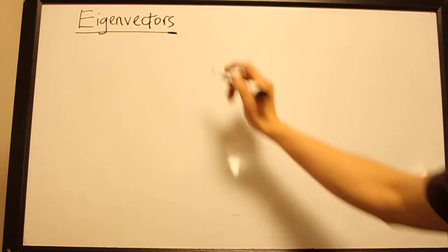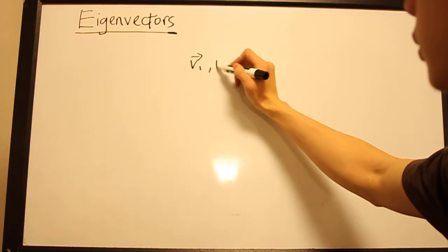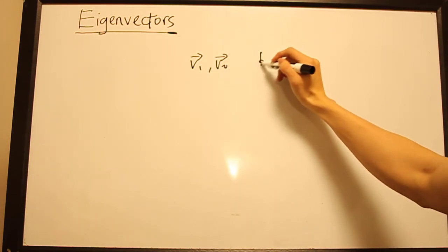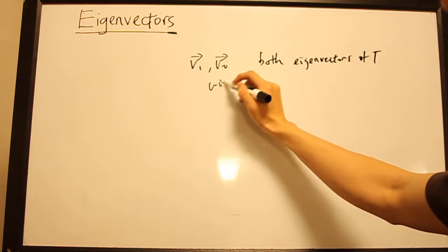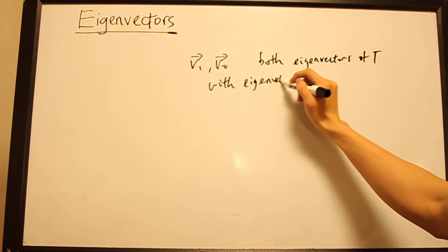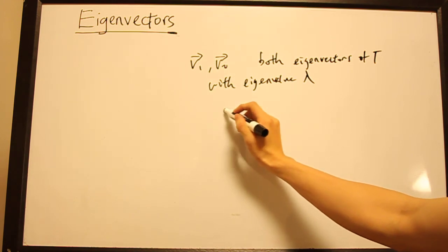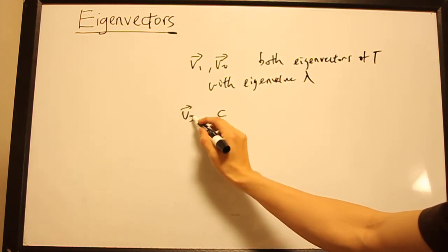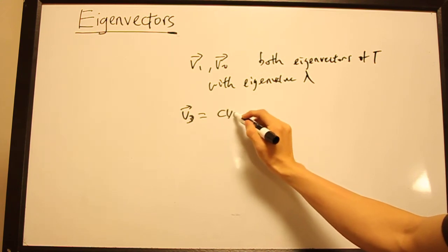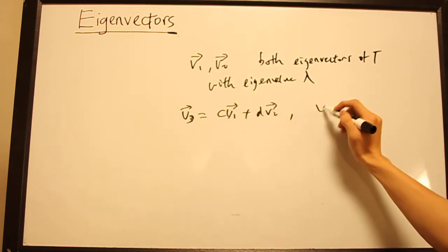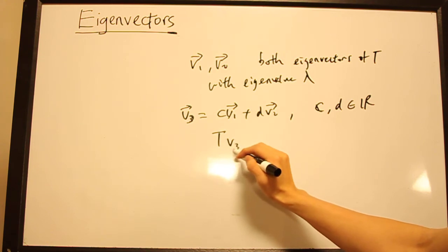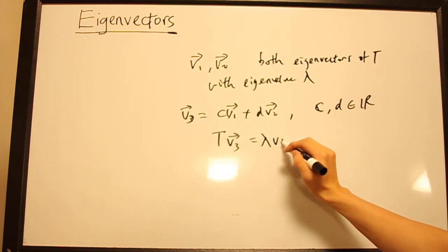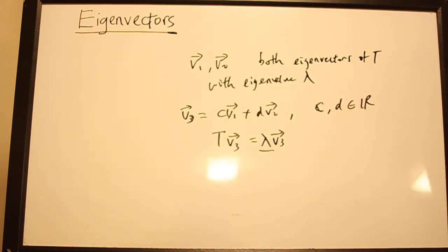Now a similar concept is that if I have two vectors V₁ and V₂, which are both eigenvectors of T with eigenvalue lambda, then any linear combination of V₁ and V₂ is going to also be an eigenvector of T with eigenvalue lambda. And these lambdas are all the same. So you should be able to prove that yourself rather easily.